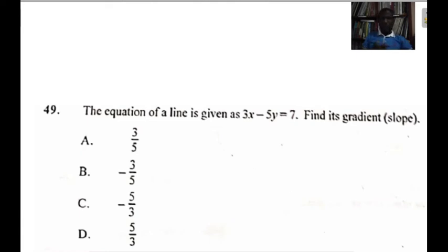Hello, my name is Mr. Chun and welcome to my study room. Today we are solving question 49 of WASSCE 2021 Core Math paper. The equation of a line is given as 3x minus 5y equals 7. Find its gradient or slope.